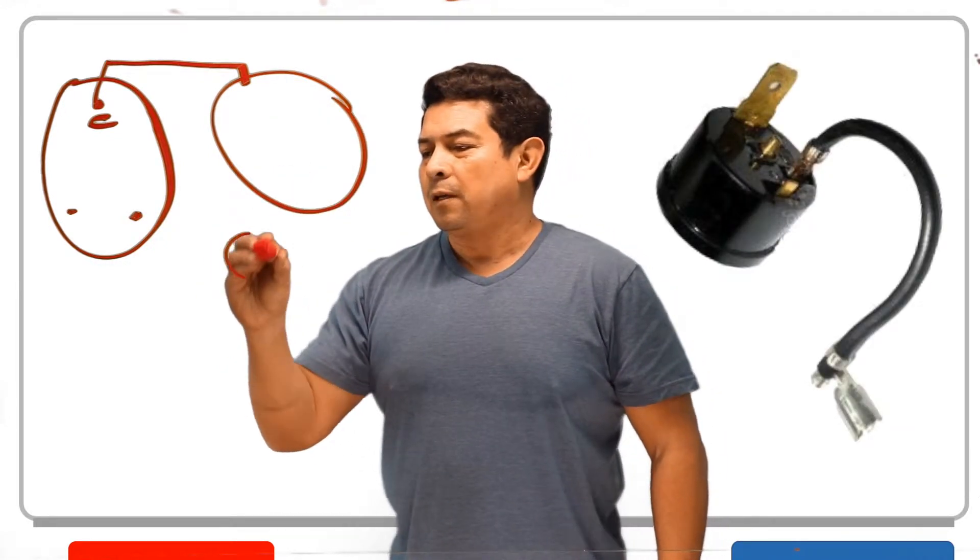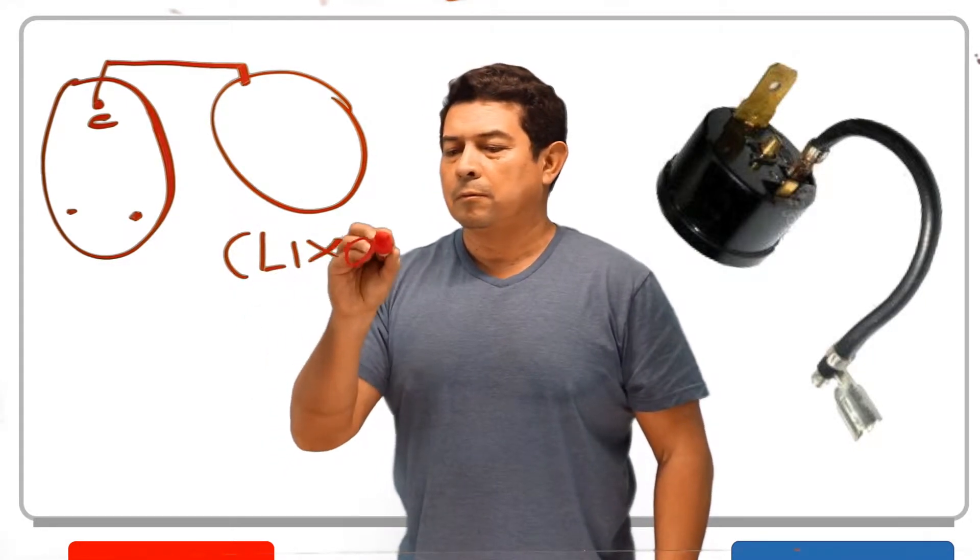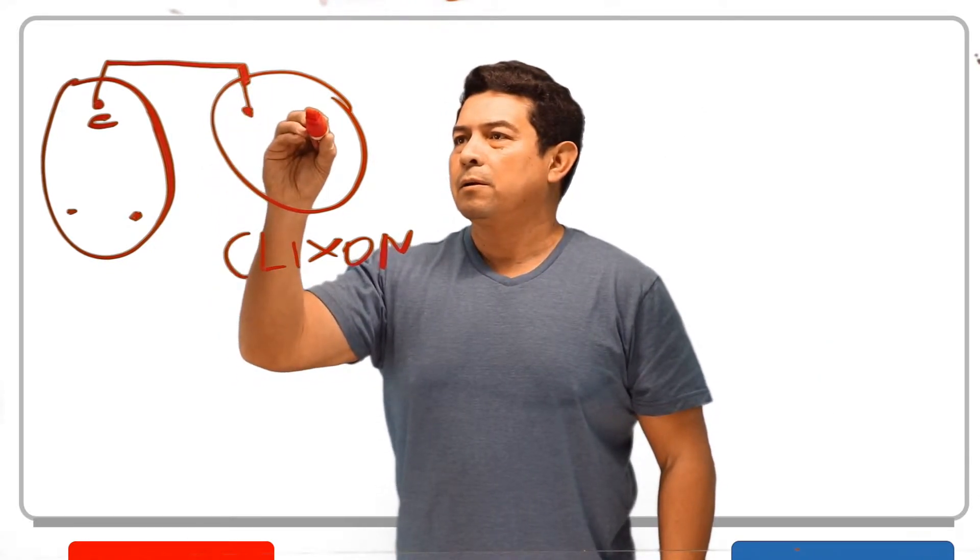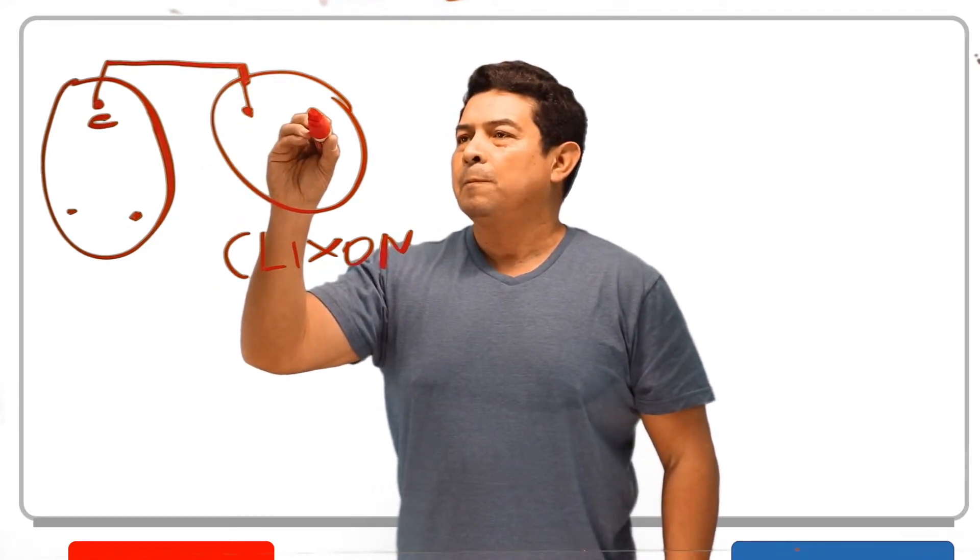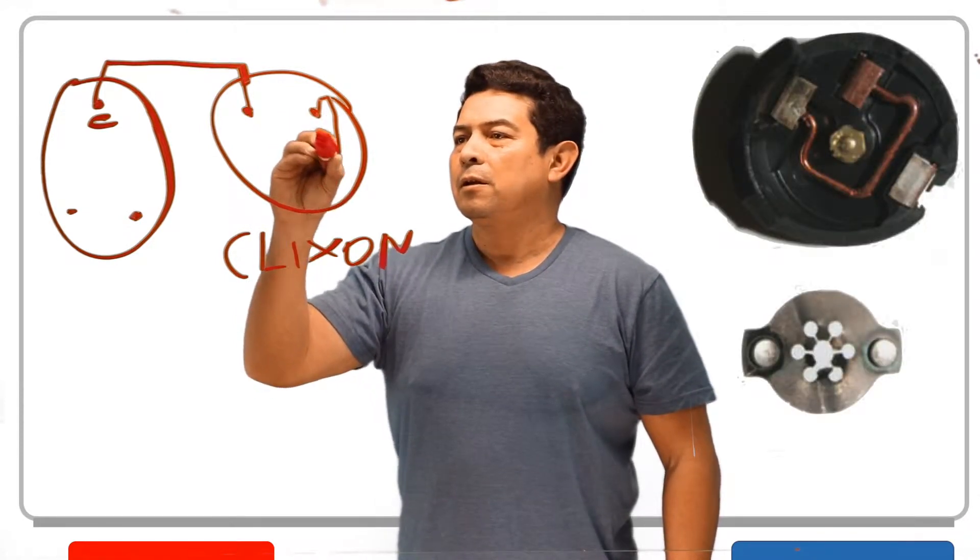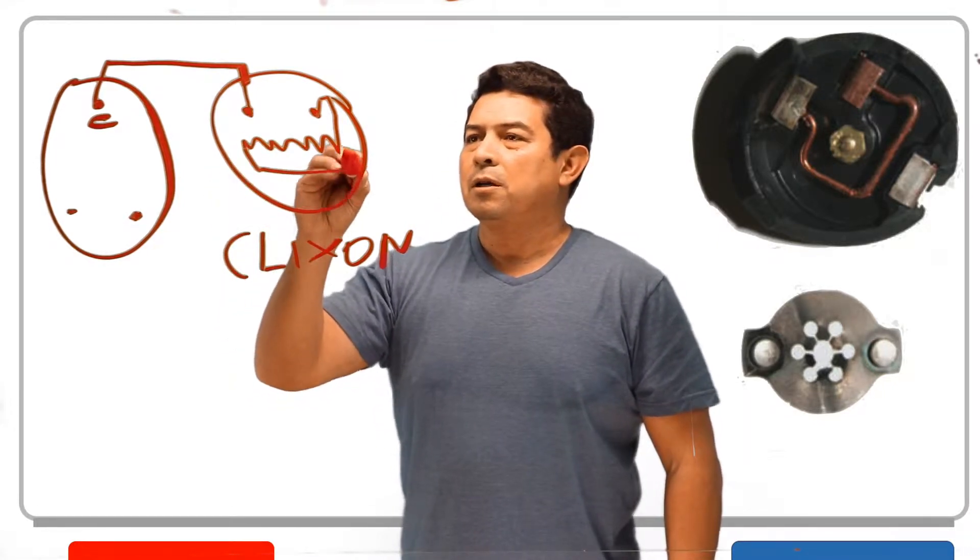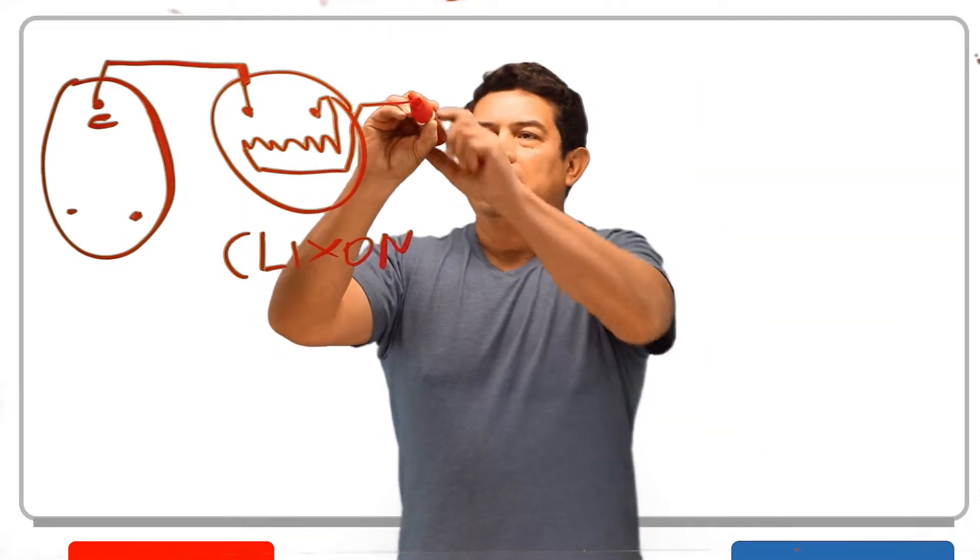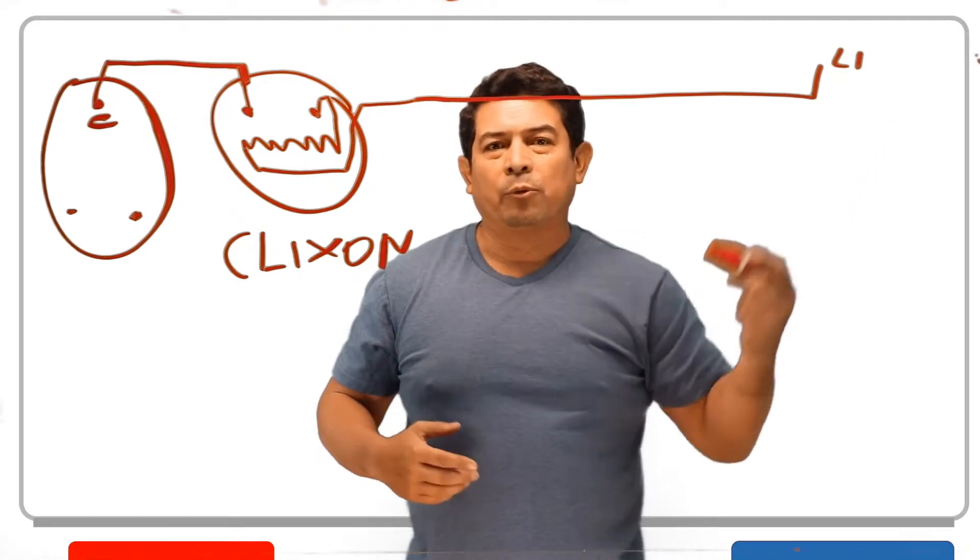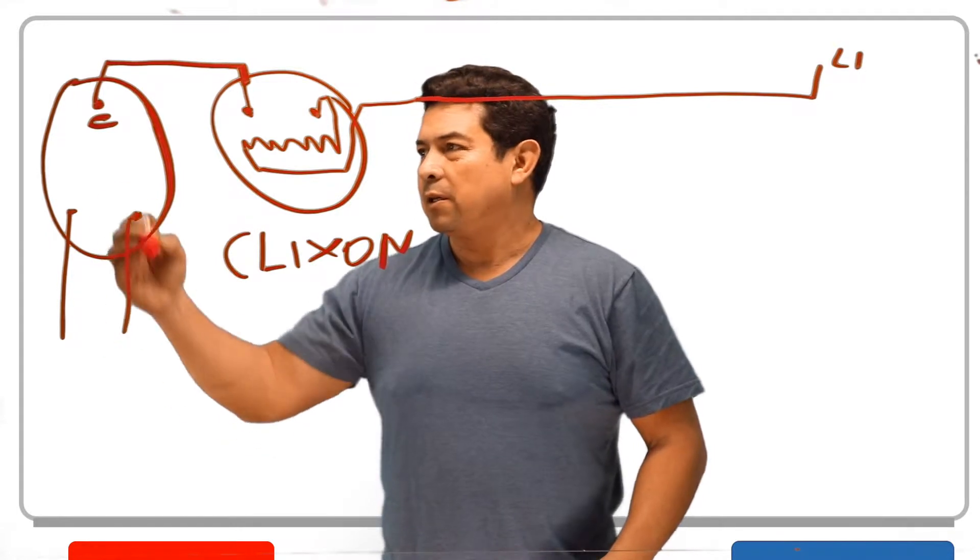The Clixxon, it is like I said, it is going to be just an overload. So it's going to have a set of contacts here, a set of contacts here, and internally what happens is it comes through like this and it has a heater inside. From here, it's going to go back on out and of course it's going to go back out to wherever power came from. Let's say in this example, L1. So we know that power of course comes in here.